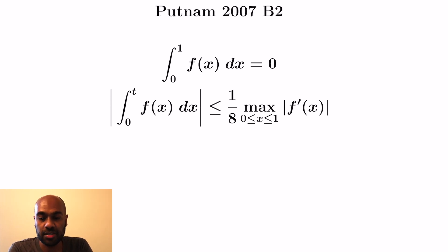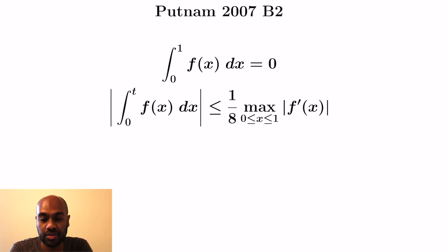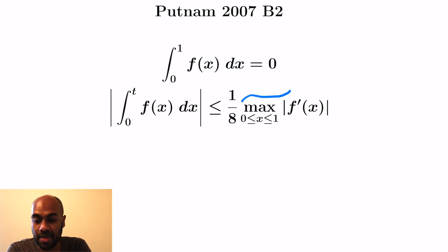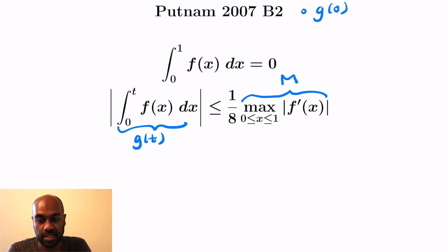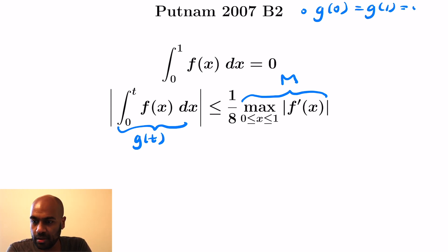The Putnam problem gives you a function f defined on 0,1 whose integral on the whole interval is 0. There's a condition that the absolute value of the integral from 0 to any value t in the interval 0,1 of f is bounded above by one-eighth times the maximum of the absolute value of the derivative. Let's label each piece: let that maximum be capital M, and the function that integrates from 0 to t be g of t. So g of 0 is 0 and g of 1 is 0 as well.